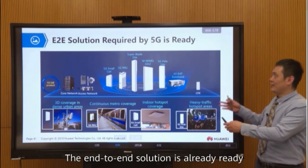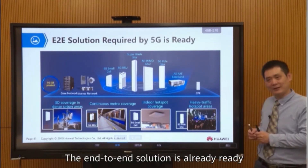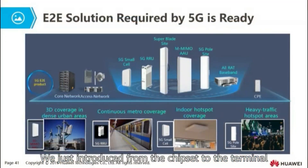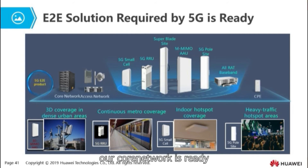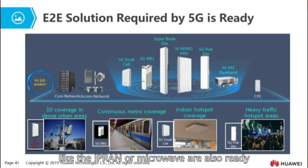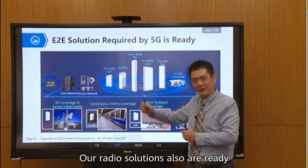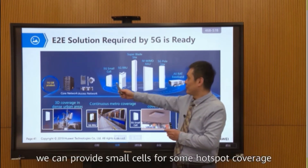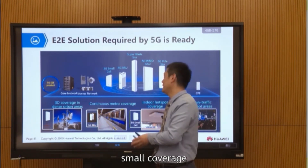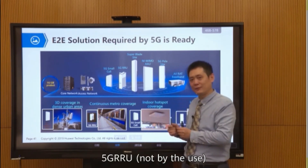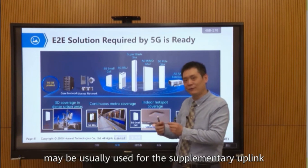The end-to-end solution is already ready. We've introduced everything from the chipset to the terminal to the frequency band. From the system side, our core network is ready. The access network — including PTN, IPRAN, and microwave — is also ready. Our radio solutions and base stations are ready as well. We can provide small cells for hotspot and small coverage scenarios. The 5G RRU is also available, though it's mainly used for supplementary uplink.